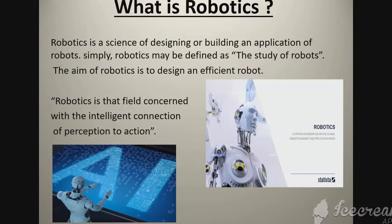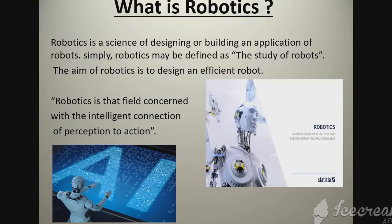What is robotics? Robotics is a science of designing or building an application of robots. Simply, robotics may be defined as the study of robots. The aim of robotics is to design an efficient robot. As we can see in the picture, robotics is that field concerned with the intelligent connection of perception to action.